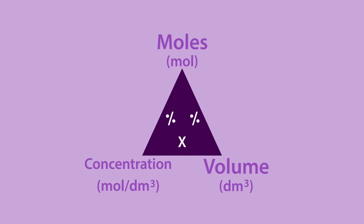You can find any of these quantities by covering up the one you're looking for with your finger. For example, if you cover moles, you can find this by multiplying the concentration by the volume. This is because any two terms on the bottom of a formula triangle are always multiplied together. If you want to find the concentration, you cover this and divide the number of moles by the volume.